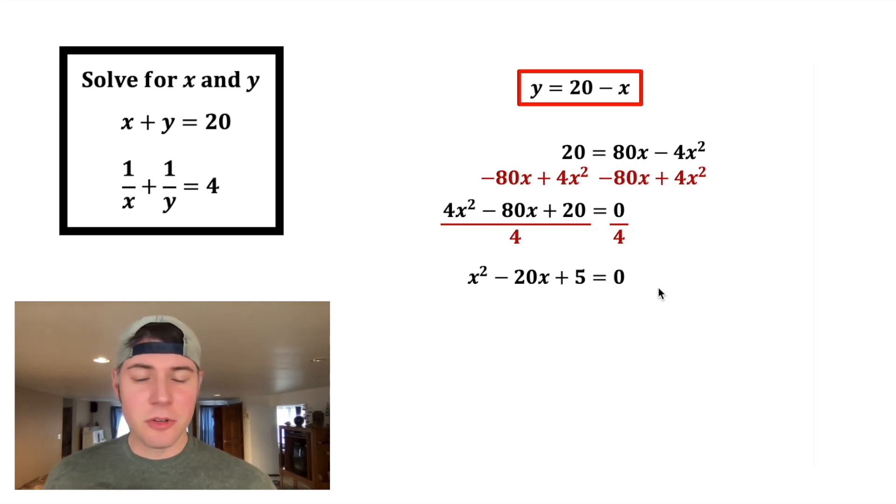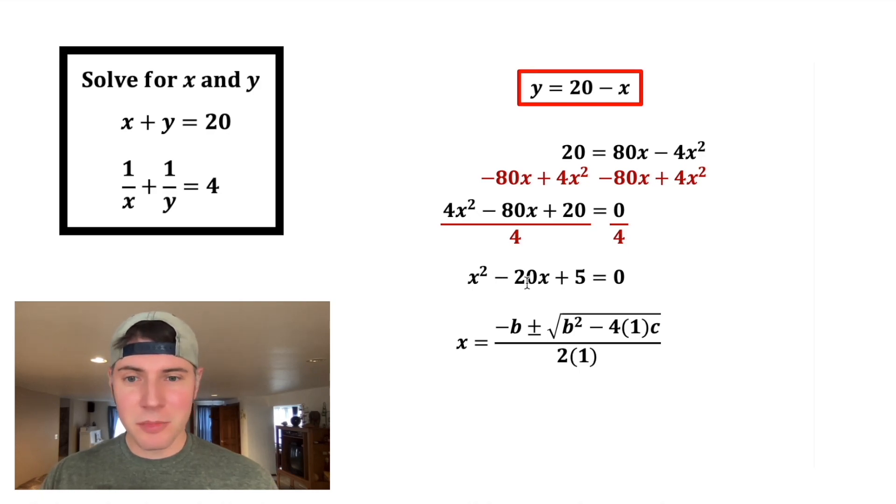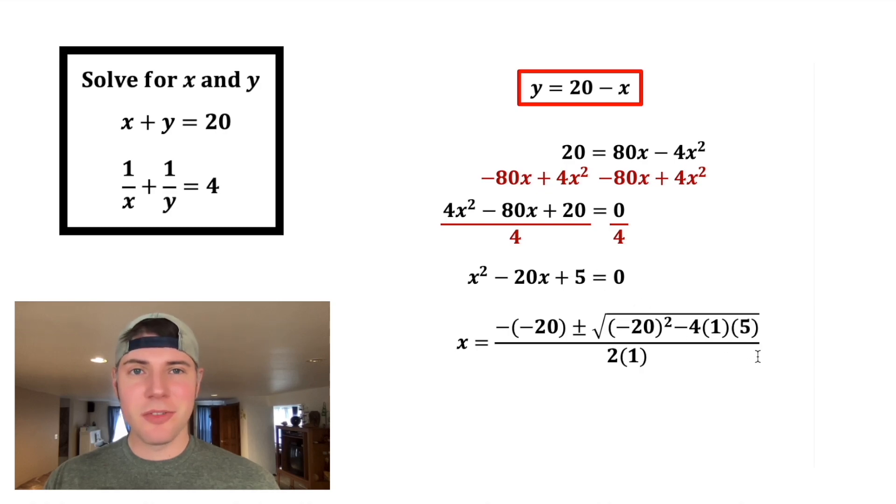I don't know how to factor this, so let's do the quadratic formula. a is the coefficient for x squared, which is just 1, so this a is a 1, and this a is a 1. b is the coefficient of the x term, so this b changes into negative 20, and this b changes into negative 20, and c is our constant term, which is 5.